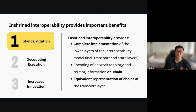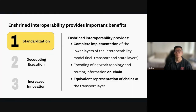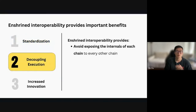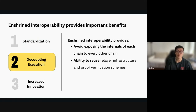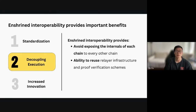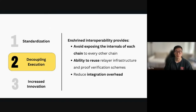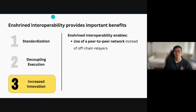Once you standardize, you can have an equivalent representation of all the chains at the transport layer. The commitment that a chain makes to all of the conversations between itself and other chains in the IBC network is exactly the same — the transfer-level encoding of all connections, channels, and packets is equivalent. With IBC, each chain retains ownership over its view of the rest of the network. There are also additional ideas like decoupling execution, avoiding exposing chain internals, reusing relay infrastructure, improving verification schemes, and reducing integration overhead.